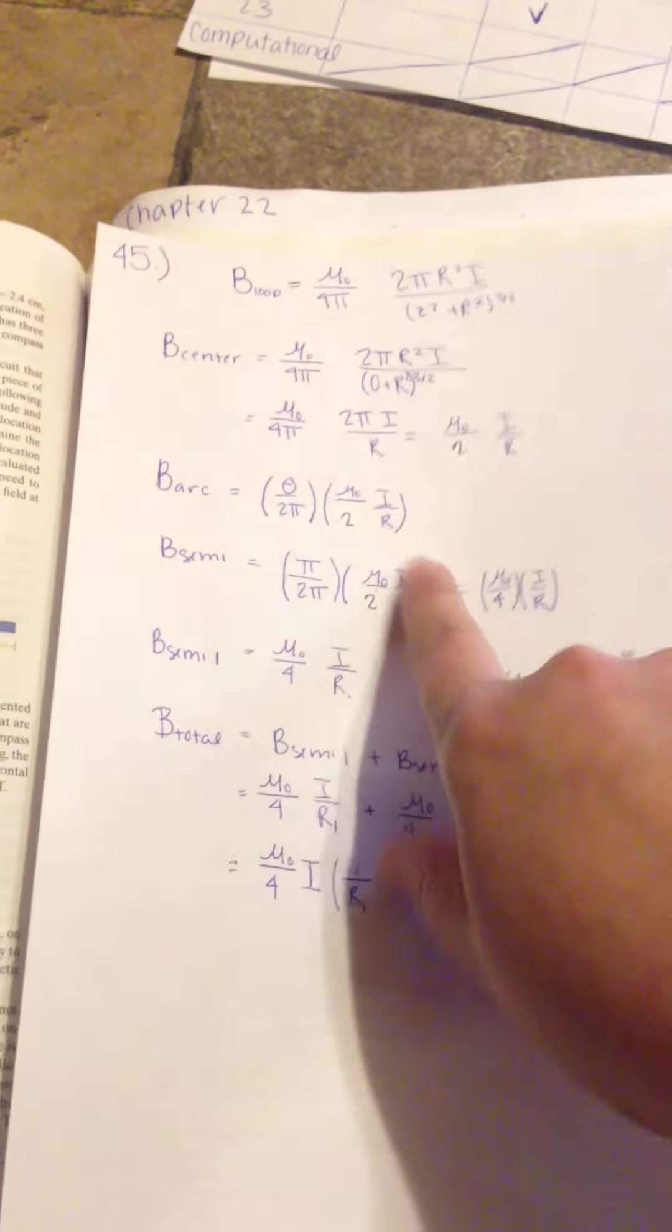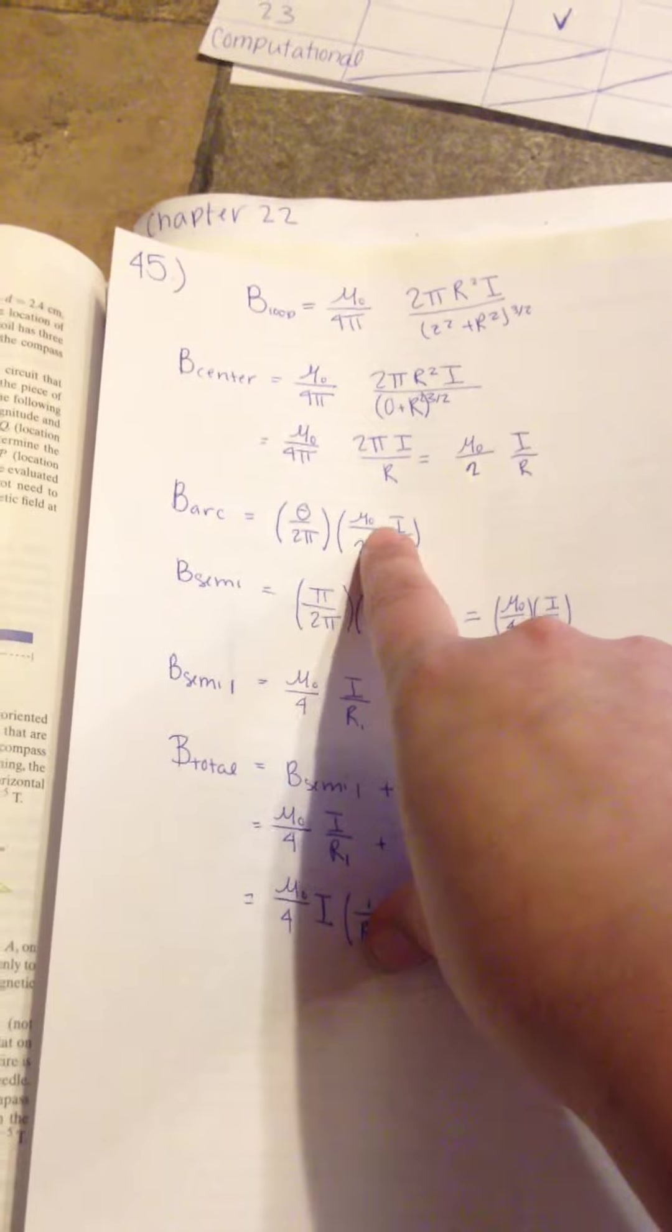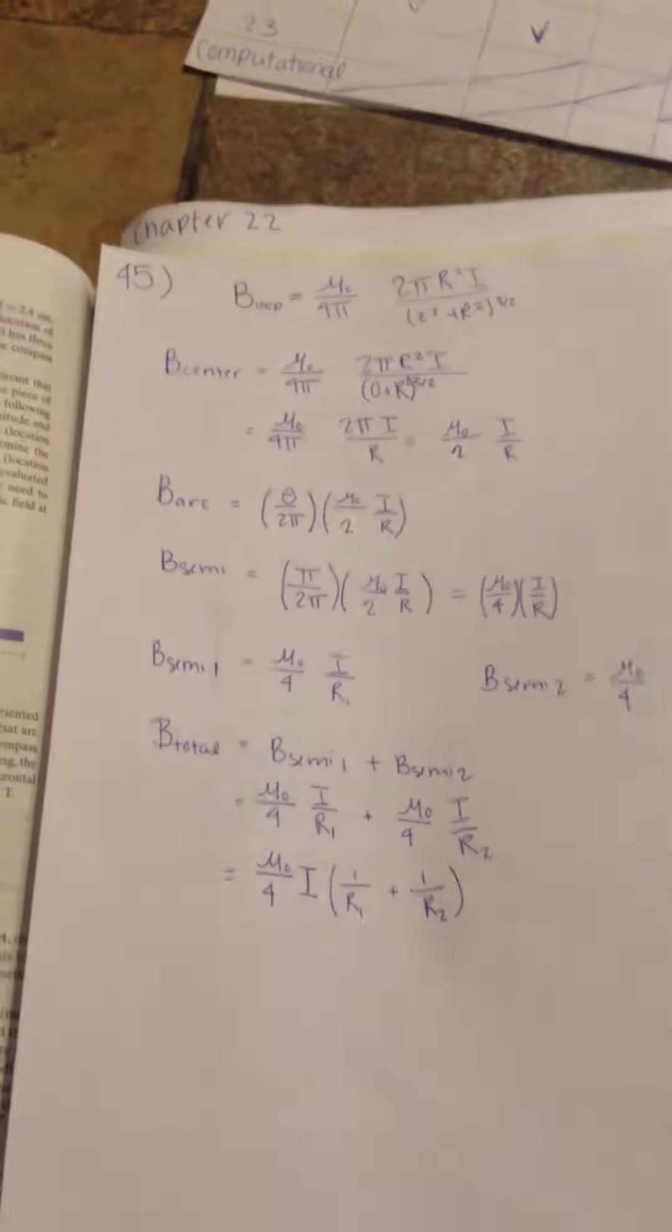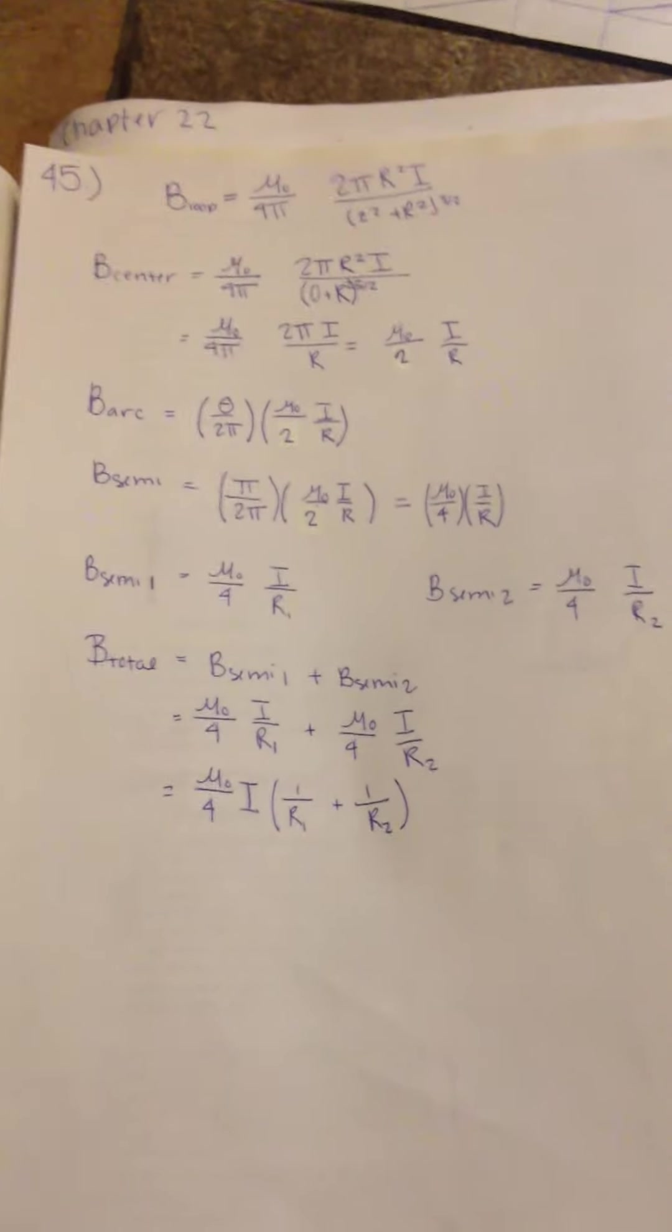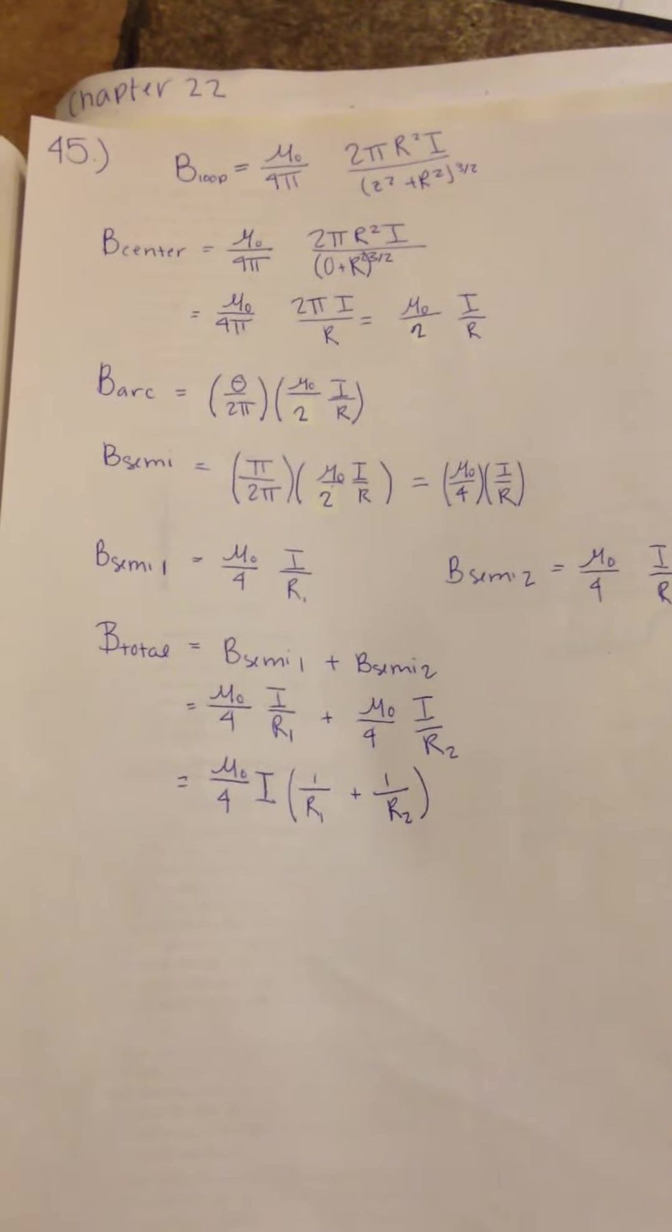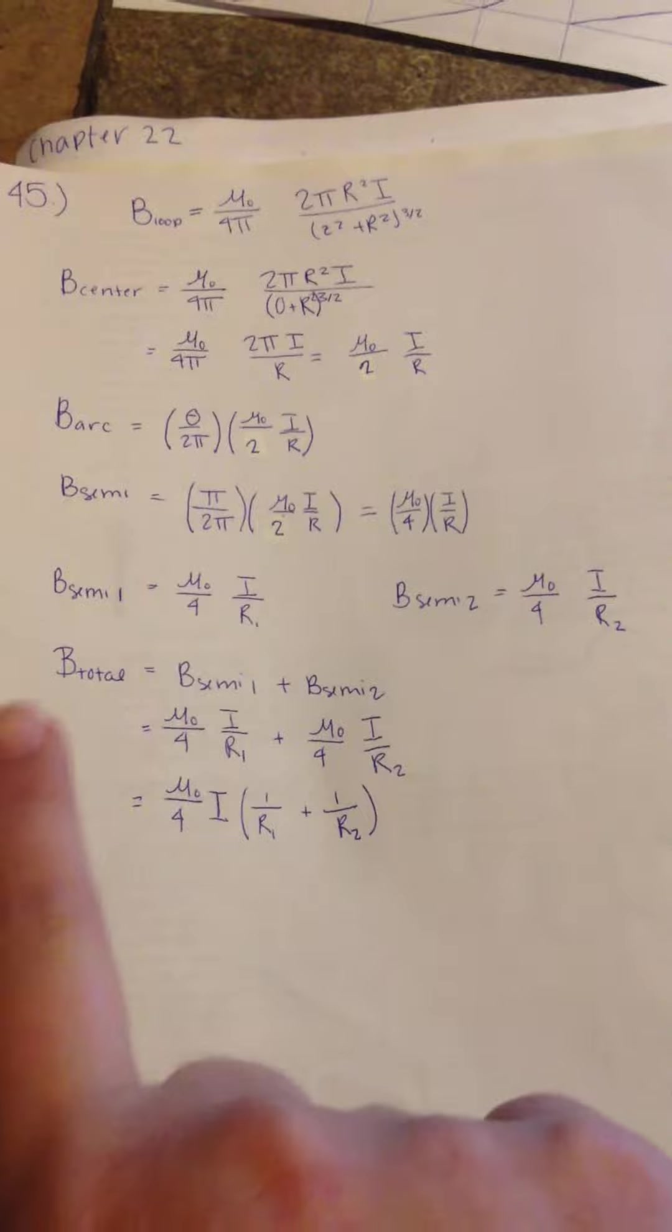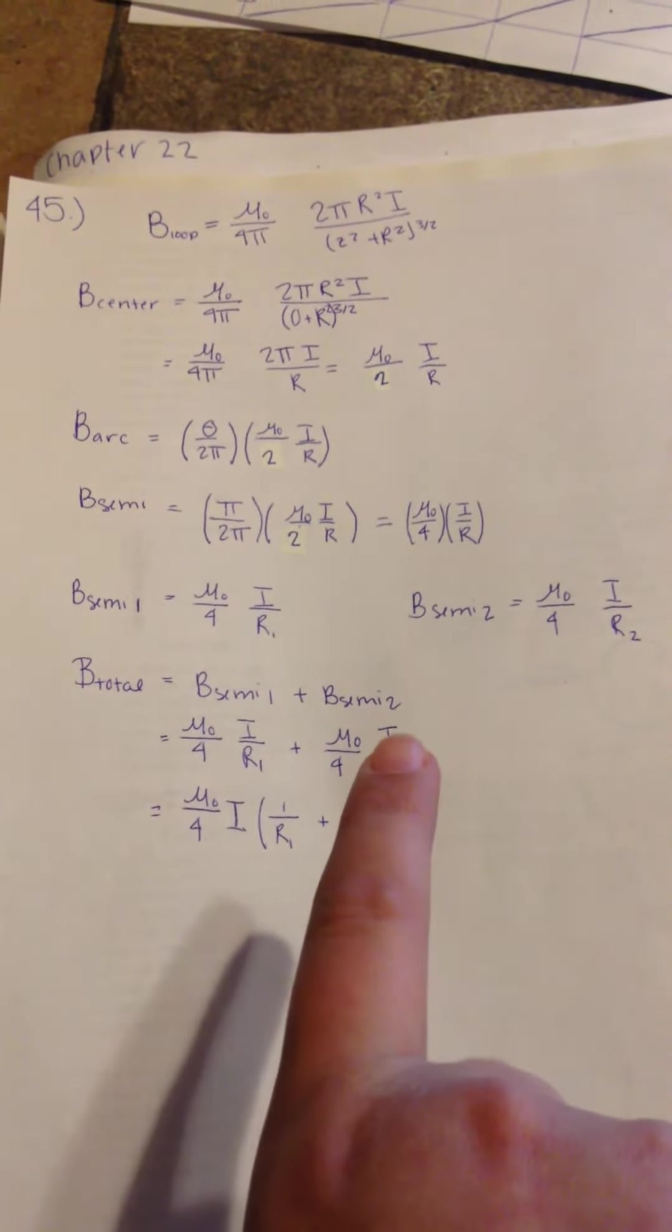And you're going to have to find the magnetic field of the arc. So it's theta over 2 pi times mu naught over 2 times I over R. This theta is going to be pi just because that's what we're measuring. It's not a full 2 pi. It's not a circle. It's just a semicircle. And then you're going to use the superposition principle and add B total. It's going to be semicircle 1 plus semicircle 2.